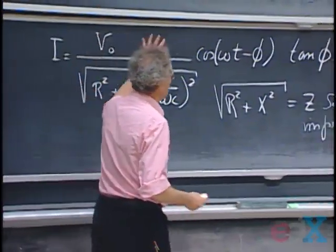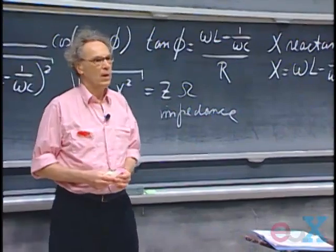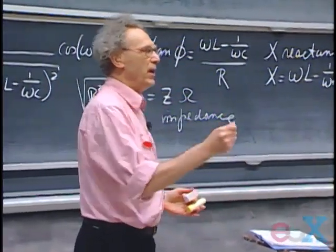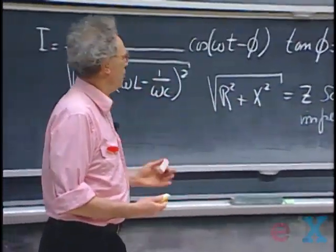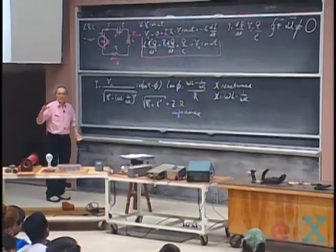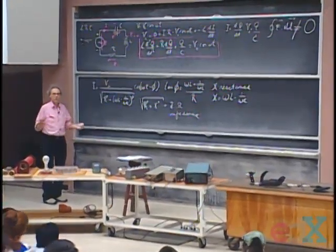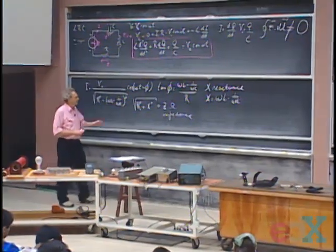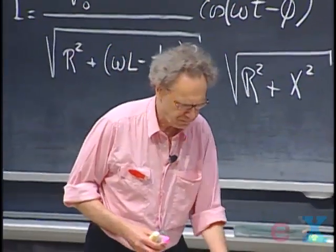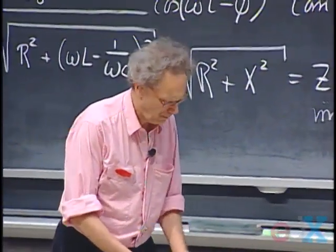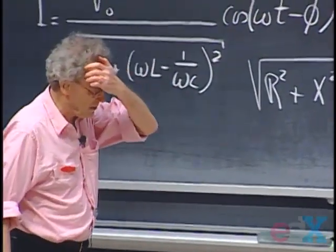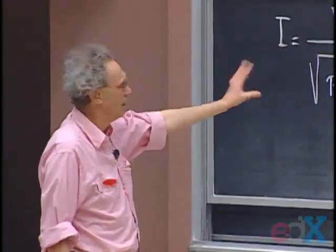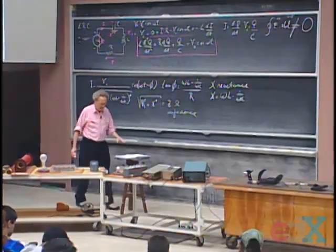This solution is what we call the steady-state solution. It is the solution you get after waiting a certain amount of time. If you suddenly turn the instrument on, in the beginning you get a different, more complicated solution — transient phenomena — but these transients die out and you end up with this solution.